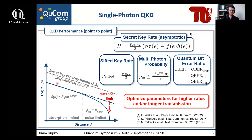At this point, I would also highlight that we can mainly distinguish two different performance optimization goals. On the one hand, for low losses, one wants to increase the overall value of the secret key rate. On the other hand, we want systems in certain situations such as satellite QKD, where we have a really high loss budget.